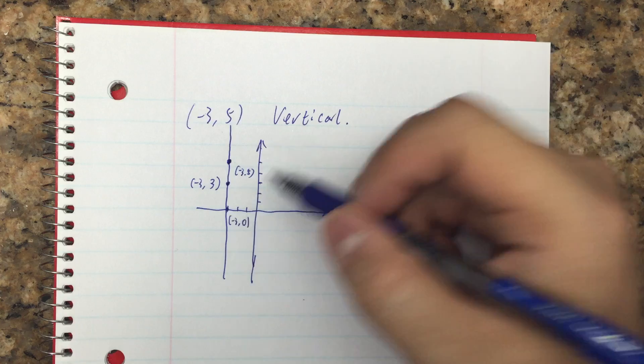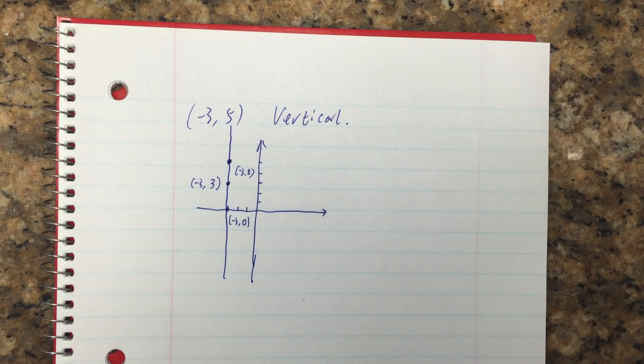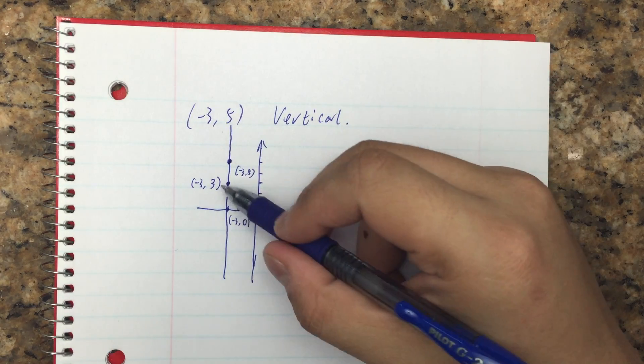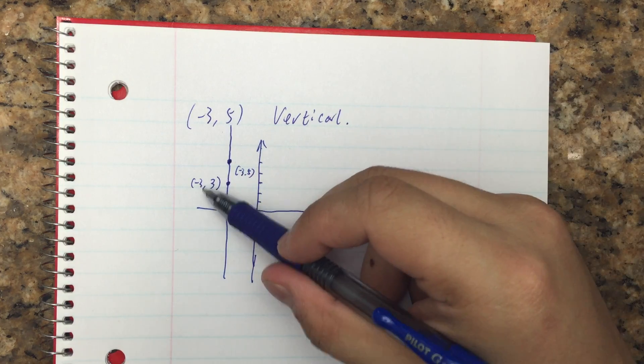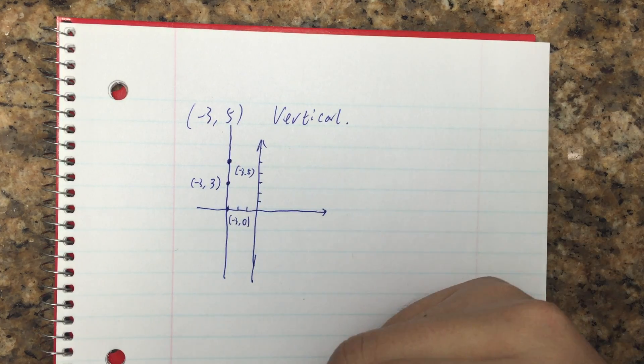So all these three points, what I found is the y value—0, 3, 5—keeps changing. But the x value is always -3.